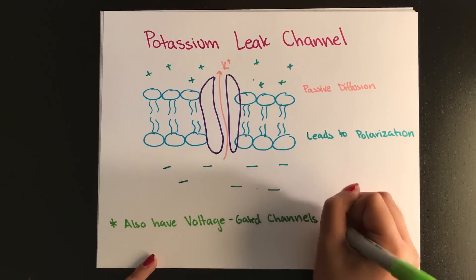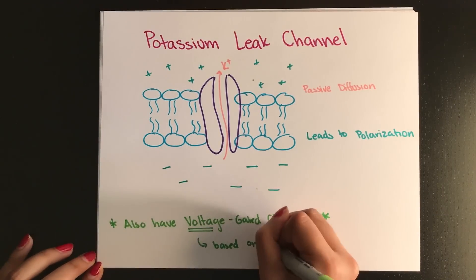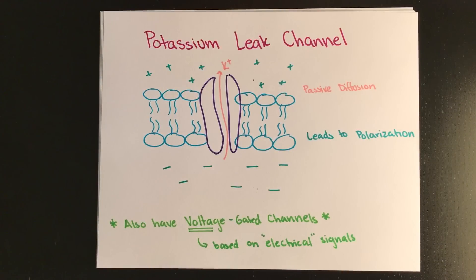Now the other type of channel you need to know about is called a voltage-gated channel, which is pretty much what it sounds like. It'll only open when it reaches a certain threshold potential. The two types of voltage-gated channels you need to know about are the sodium-voltage-gated channels and the potassium-voltage-gated channels.